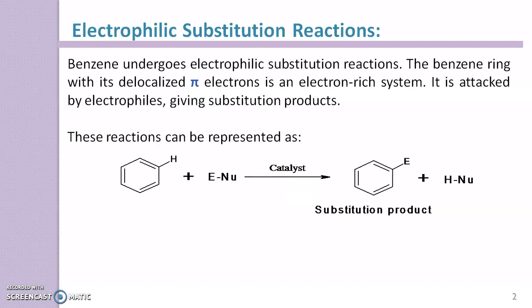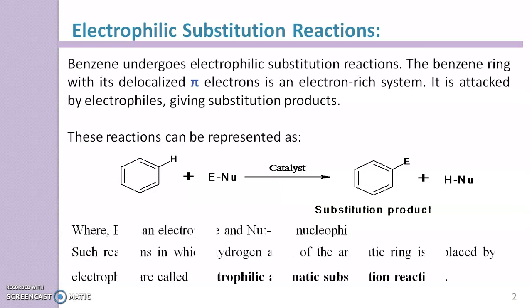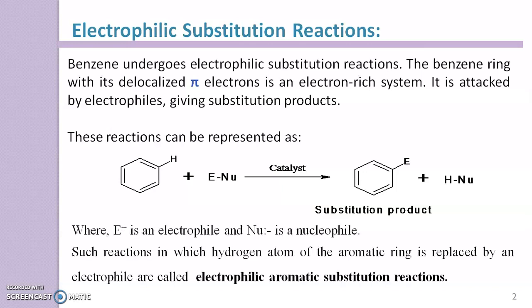Here is the reaction of this electrophilic substitution reaction. All hydrogens of benzene are equivalent, but here I am showing just one hydrogen. In presence of a catalyst, the electrophile replaces this hydrogen and forms a substitution product. In this general reaction, E is an electrophile and Nu is a nucleophile. Such reactions in which a hydrogen atom of the aromatic ring is replaced by an electrophile are called electrophilic aromatic substitution reactions.